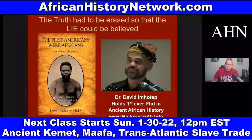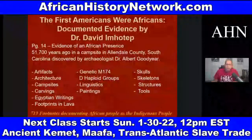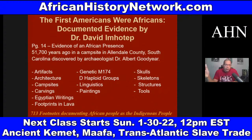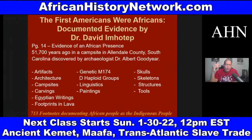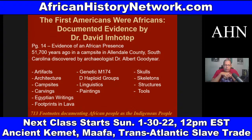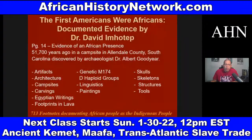On page 11 of Dr. David Imhotep's book, he deals with evidence discovered in Allendale County, South Carolina, by Dr. Albert Goodyear, an archaeologist at the University of South Carolina. In 2004, they found 13 different types of evidence thoroughly documenting an African presence in South Carolina dating back at least 51,700 years ago — including artifacts, architecture, campsites, carvings, Egyptian writings, footprints, DNA/haplogroup genetics, linguistics, paintings, skulls, skeleton structures, and tools.